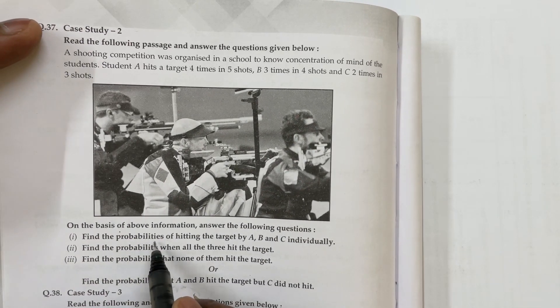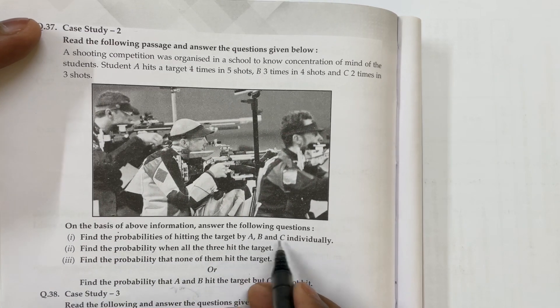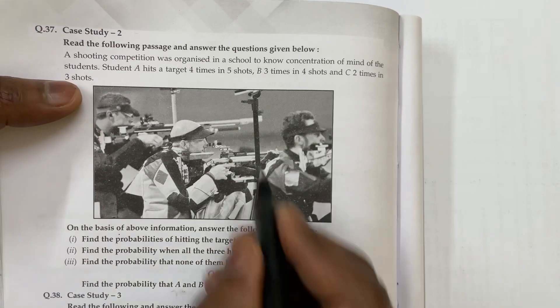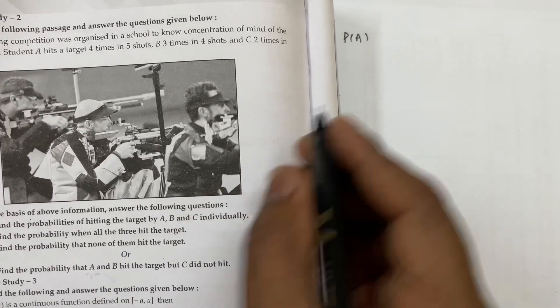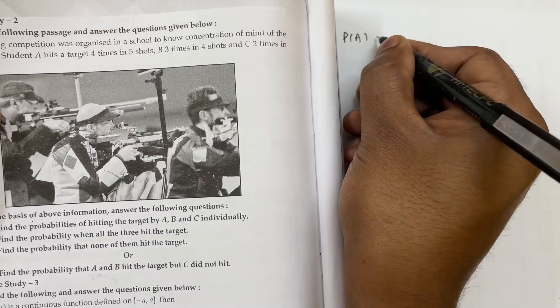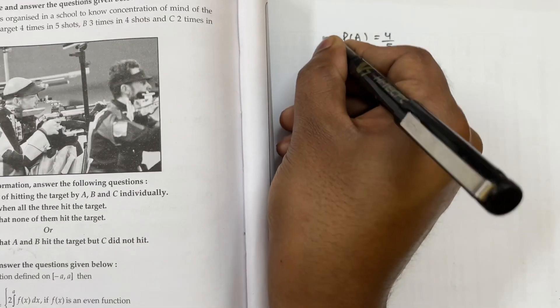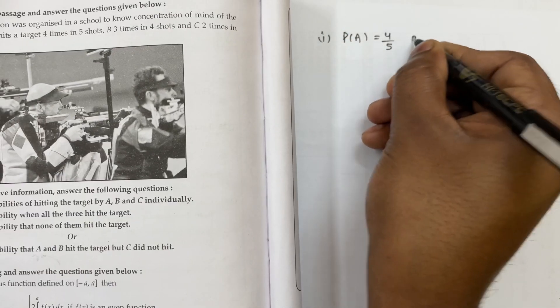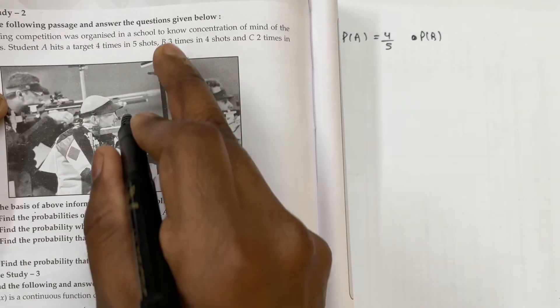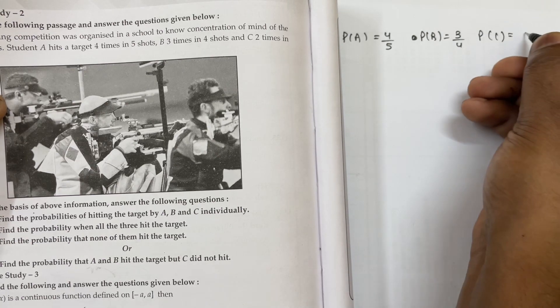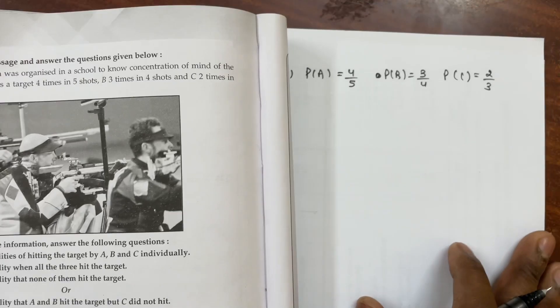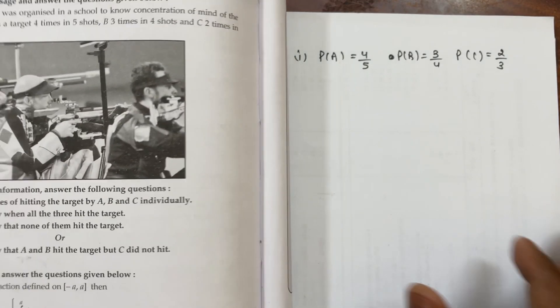On the basis of the above information, answer the following questions. Find the probabilities of hitting the target by A, B and C individually. The probability of A hitting the target is 4 times in 5 shots, so it is 4 by 5. Probability of B is 3 times in 4, which means 3 by 4. Probability of C is 2 times in 3, which means 2 by 3. This is the first part.